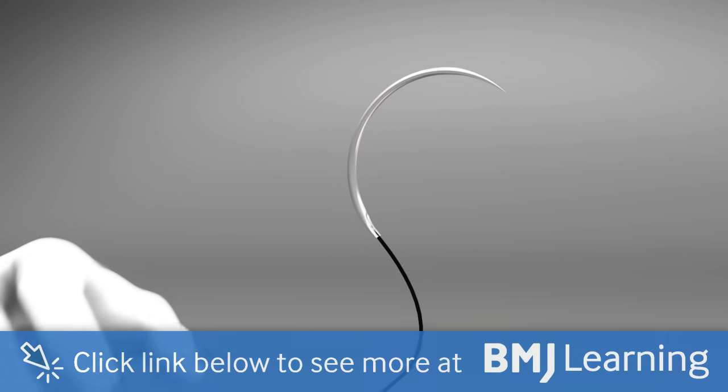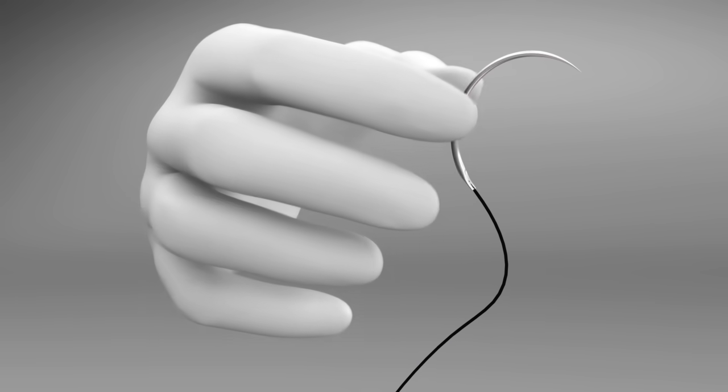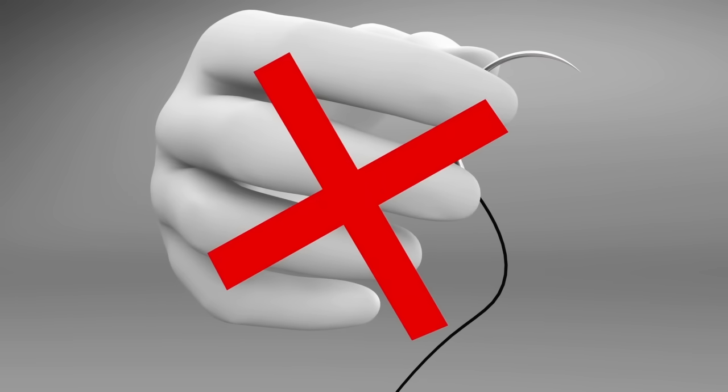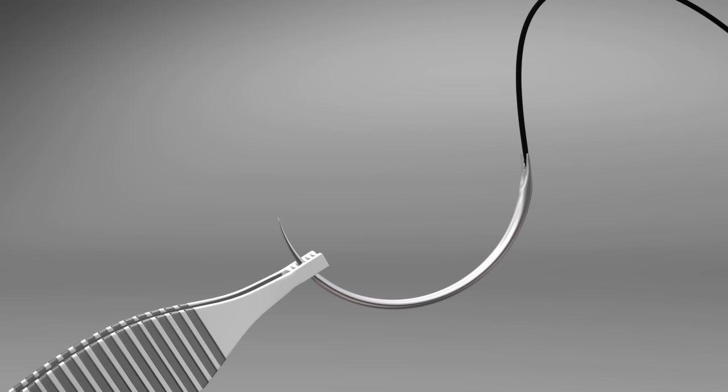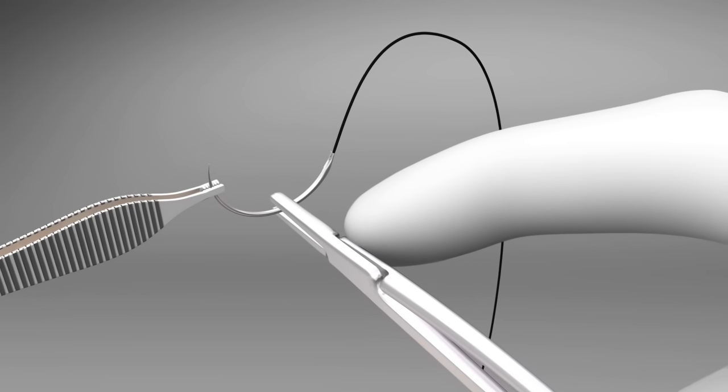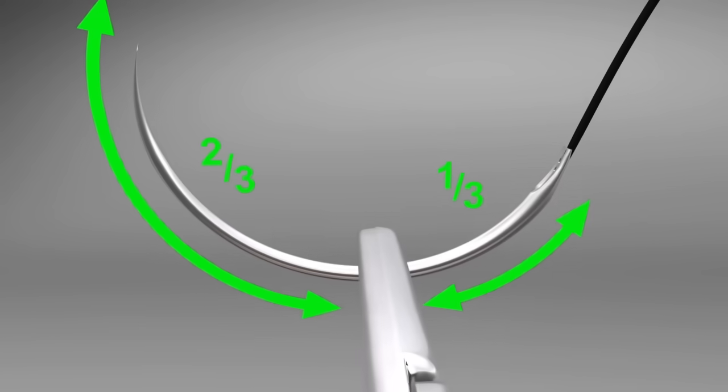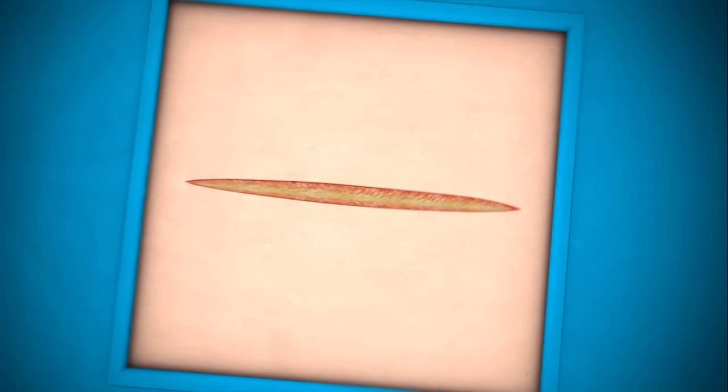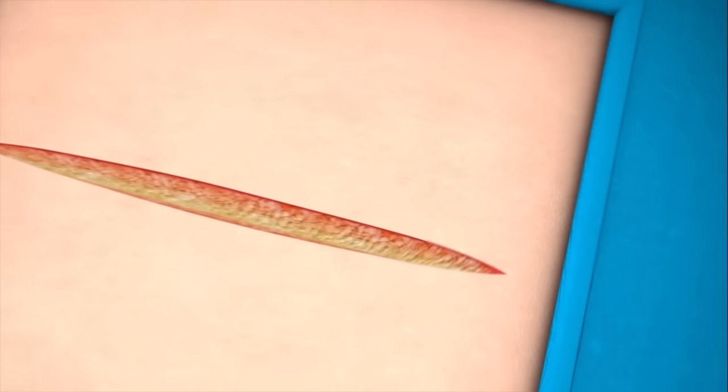Always use the instruments to pick up the needle and never use fingers risking a needle stick injury. Use the forceps to position the needle in the tips of the needle holder, grasping it approximately two-thirds along from the point of the needle. For small wounds, start suturing at one end of the incision.